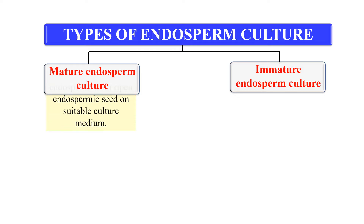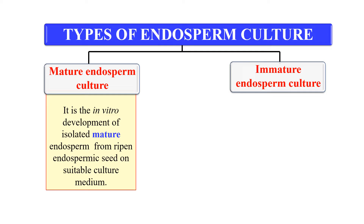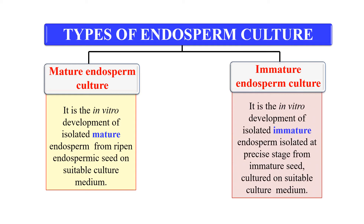Mature endosperm culture — as the name indicates, here we take the mature endosperm. It is the development of mature endosperm from ripened endospermic seed on a suitable medium. While in immature endosperm culture, we isolate the immature endosperm and allow it to grow on a suitable medium. So endosperm culture is the culturing of endosperm on an artificial medium, including either mature or immature endosperm culture.